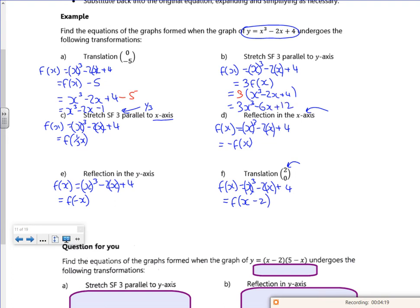So this one I'm replacing x with a third x. So it's going to be a third x, x cubed minus 2 lots of. So this is where putting the brackets around really, really helps you.